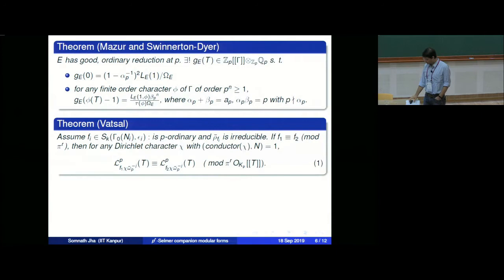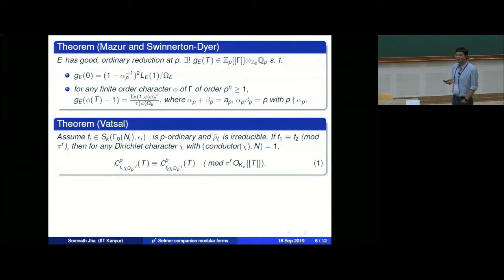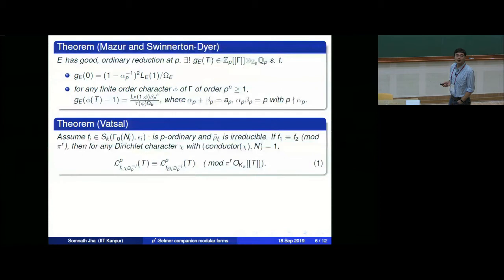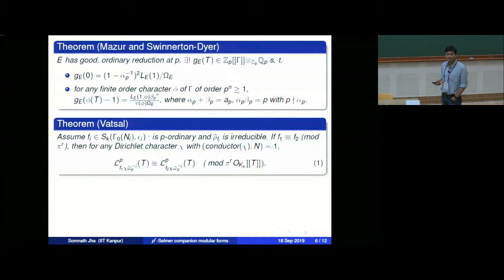This is a congruence result established by Watzell in the 1980s. Now, continuing to assume that the residual representation A_{f_i}[π] is an irreducible G_Q-module and that f_i is p-ordinary, we can consider the Pontryagin dual of the Selmer group over Q_{cyc}. By deep results of Kato, this is known to be torsion over the Iwasawa algebra, and by results of Greenberg (and Himmert and Pollack-Weston in this context), it has no pseudo-null submodule.